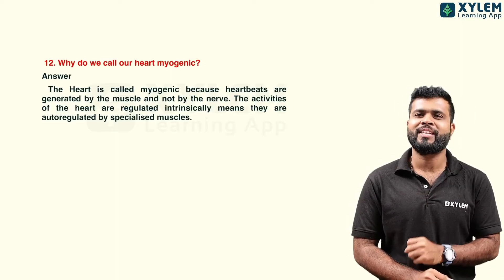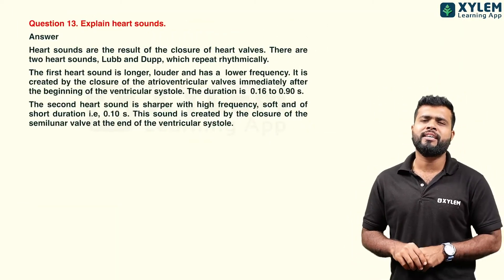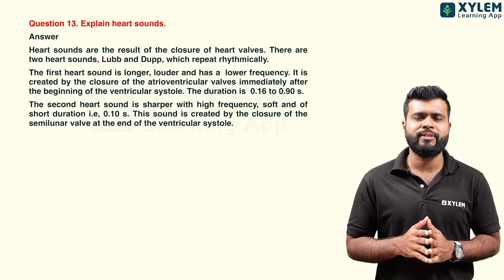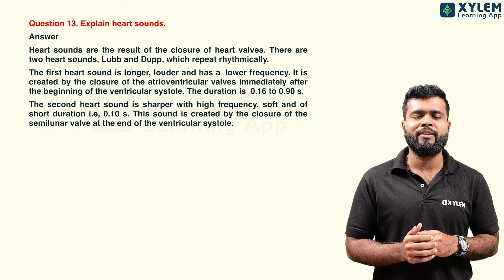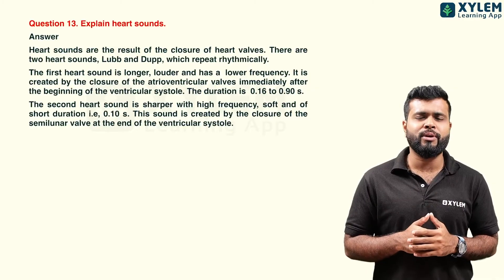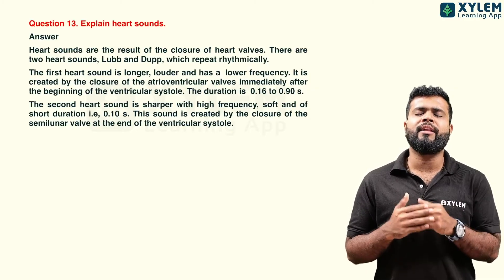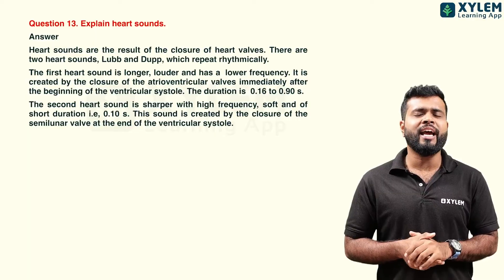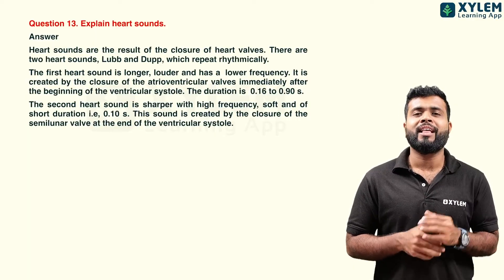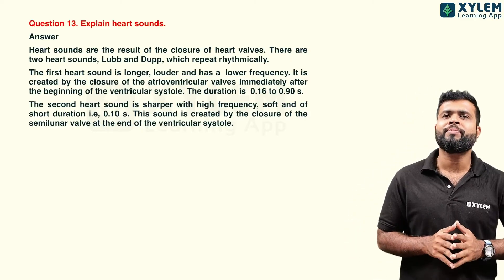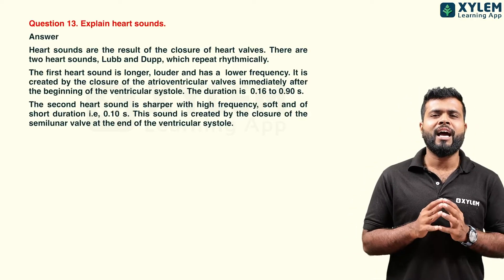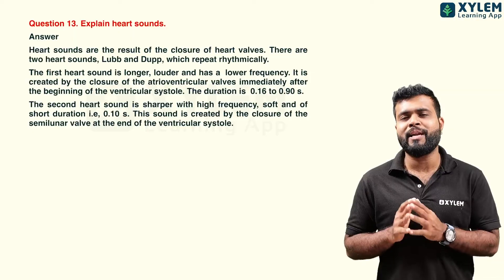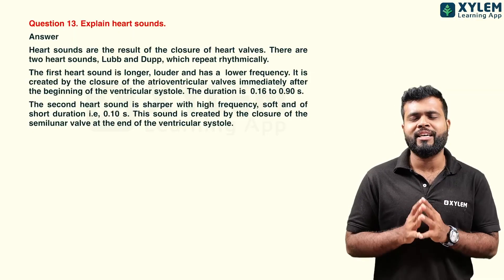Next question: explain heart sounds. The first heart sound, 'lub', is produced due to the closure of the tricuspid and bicuspid (mitral) valves at the beginning of ventricular systole. The second heart sound, 'dub', is produced due to the closure of the semilunar valves during diastole.